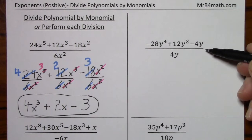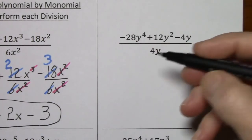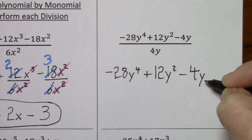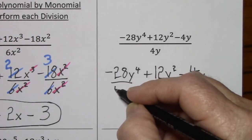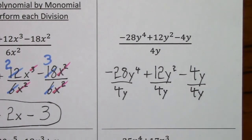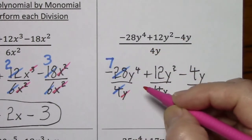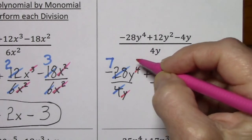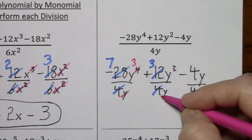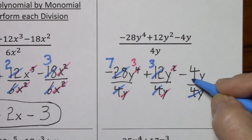Over here we have another typical example. I'll rewrite the numerator and keep the signs up with the numerator. Put 4y in each denominator, and now simplify each fraction. Divide by 4, divide by 4, and for the y's, cross out y to the 1st and subtract 1.